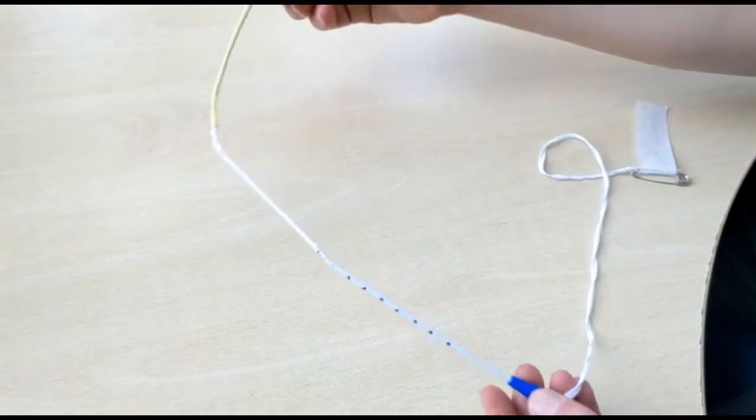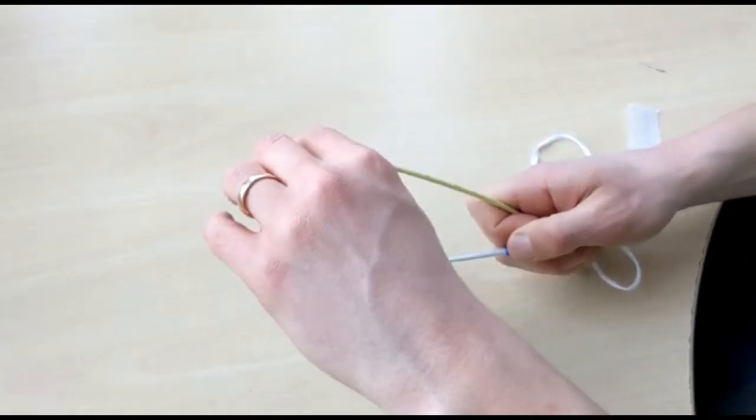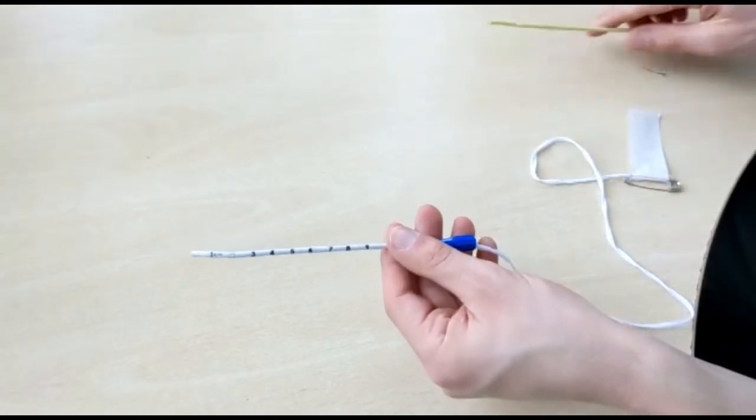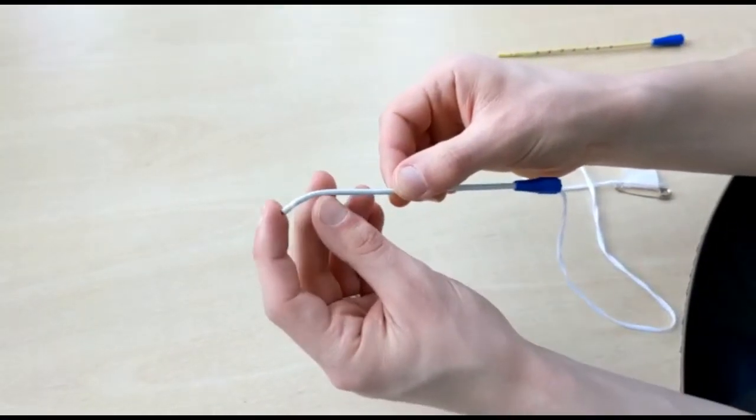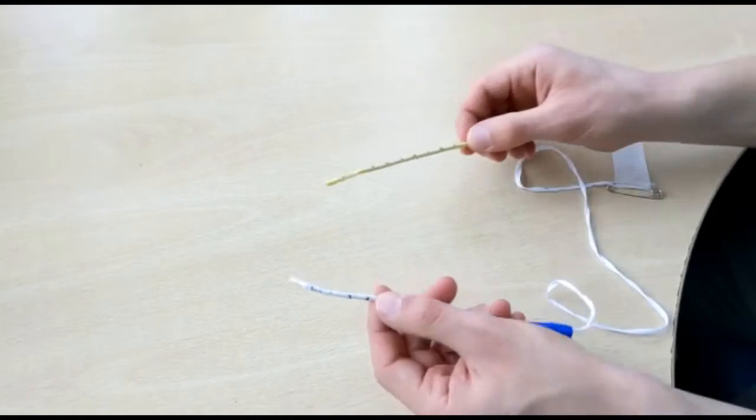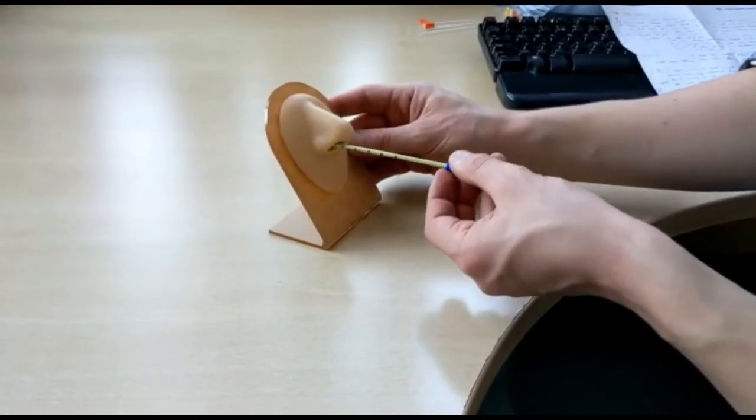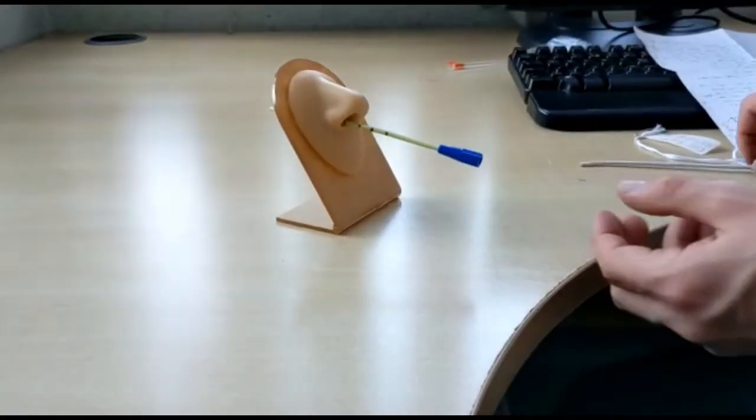It can also help to take the magnet string slightly out of the white pole. This will help it connect easier in the nasopharynx. Insert one pole at a time, with the aim of placing the magnets in the nasopharynx.